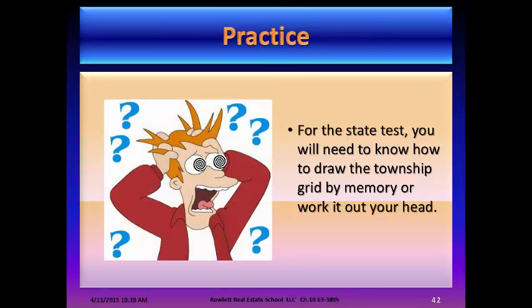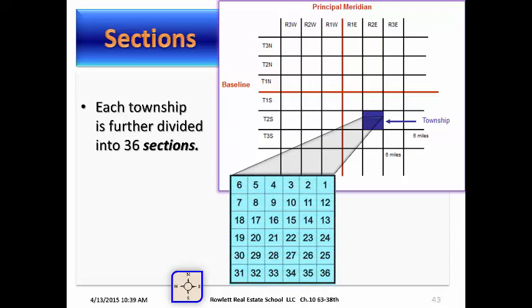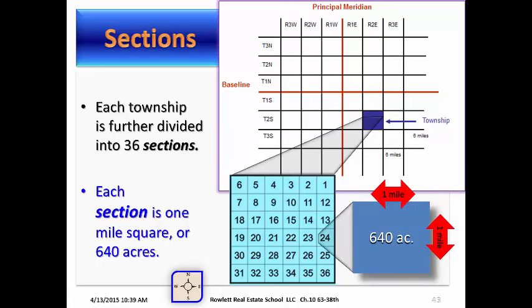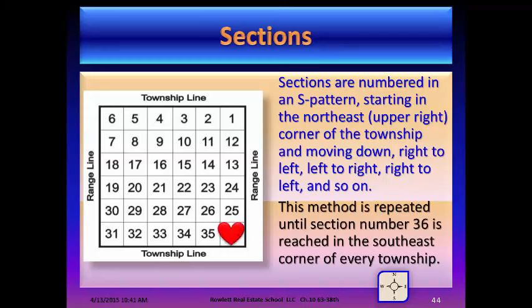For the state test, you will need to know how to draw the township grid by memory or work it out in your head. Each township is further divided into 36 sections, each one square mile or 640 acres. Sections are numbered in an S pattern, starting in the northeast upper-right corner of the township and moving right to left, then left to right, alternating until reaching section 36 in the southeast corner of every township.